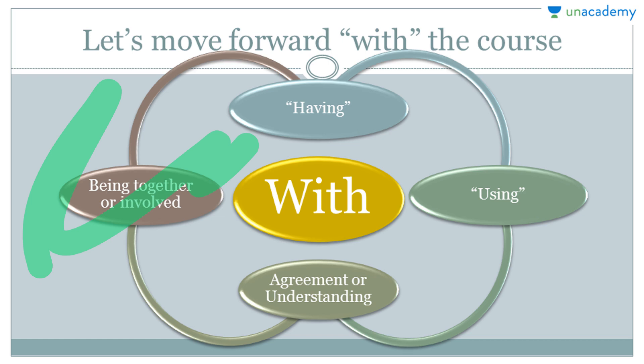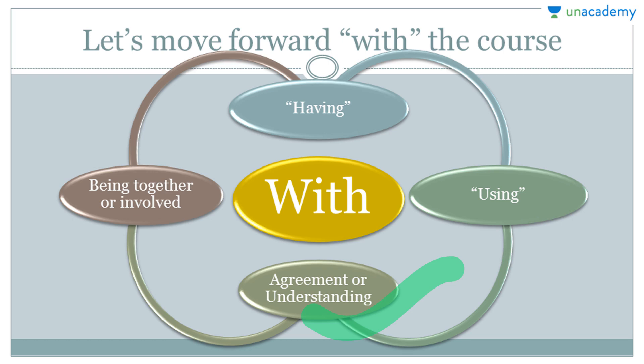Let's examine the places or situations in which 'with' is used. The first is 'having' — a sense of possession of something. The next is 'using' — when we get the sense of using or making use of something. Also, agreement or understanding, for example: 'I agree with you on this point.' And 'with' is used to show that something or someone is together or involved with each other.